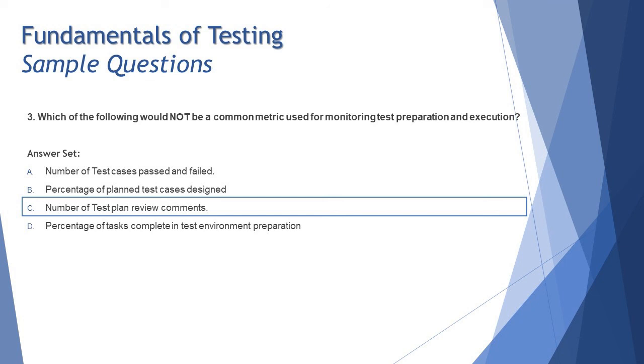C is the right answer here that is number of test plan review comments which is only for a review phase. Probably you are conducting a review and you have taken review comments from your team members in order to enhance or update it.